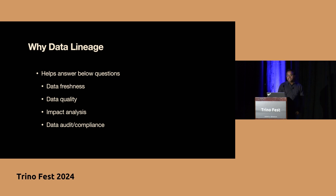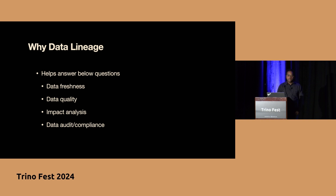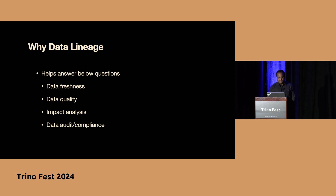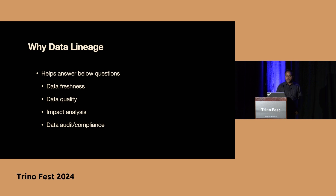Although some data tools have lineage built in — for example, Airflow has a DAG graph and DBT also has something built in — tracking lineage across the platform is a difficult problem because you have to take one system's lineage, ingest it into another system, and try to find out the end-to-end lineage across platforms. So we need some sort of open standard that helps define lineage in a much more interoperable way so that one system's lineage is well understood by another.